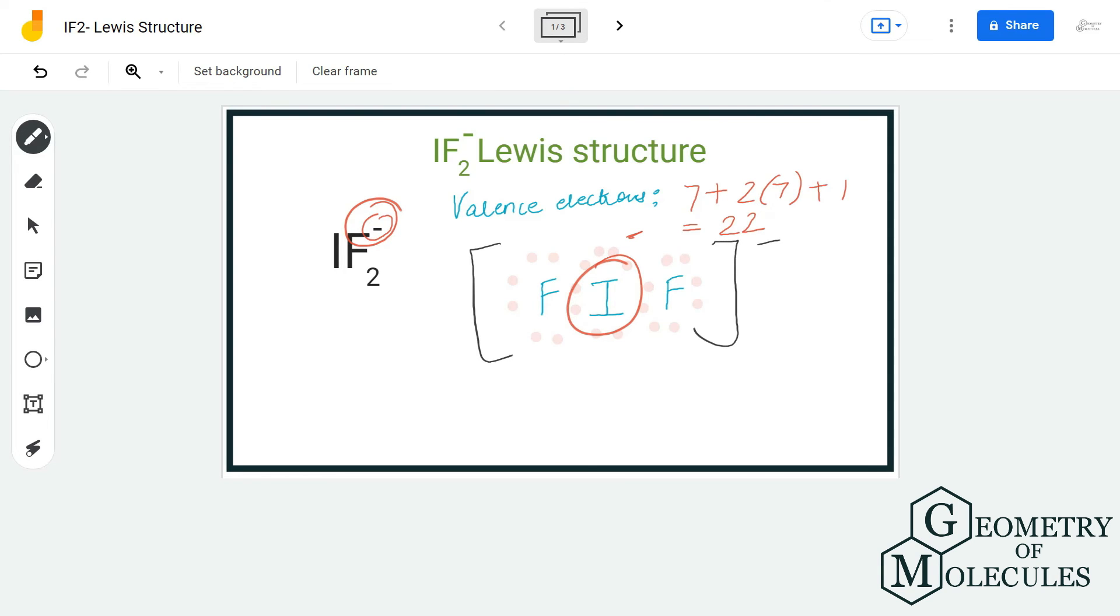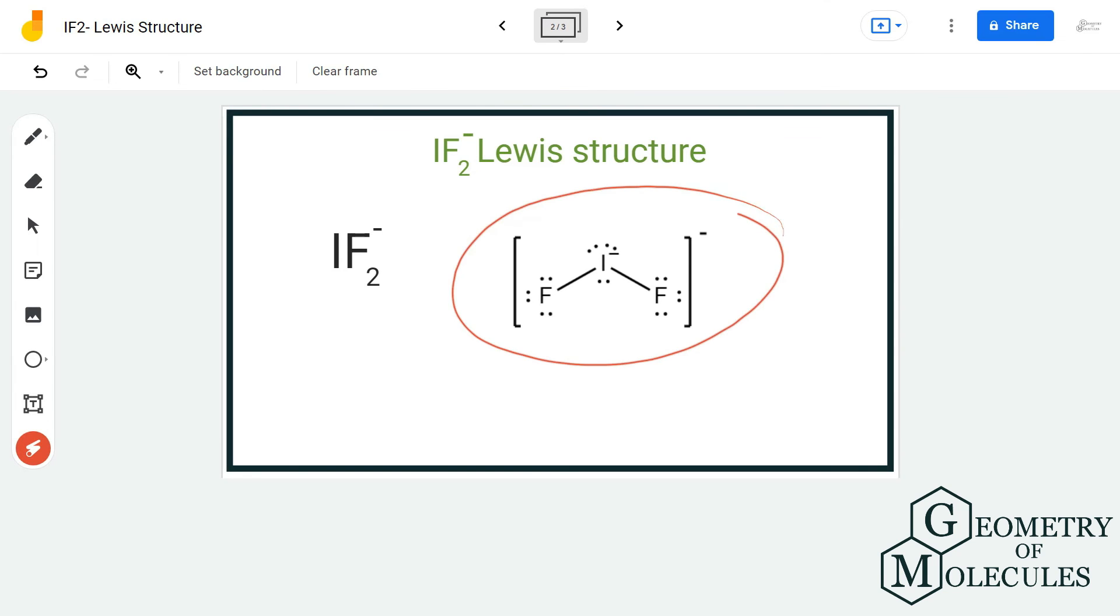Do not forget to put brackets around the Lewis structure of ions and also mention its charge. Here it is minus one, so I'm only going to place a minus charge over here. I hope this video helps you to understand this.